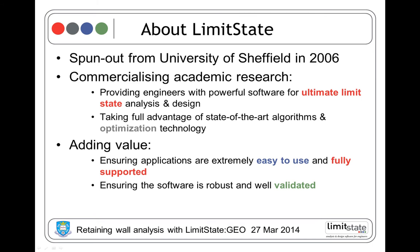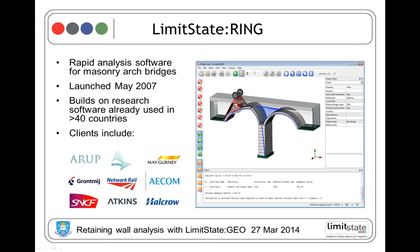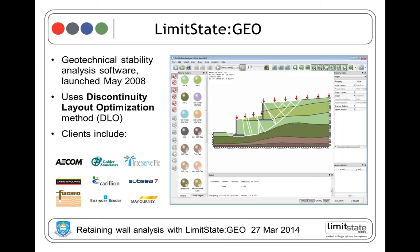For those new to this webinar series, it's useful to give a brief context of the software and the company. LimitState — spun out from the University of Sheffield in 2006 — has been conducting research into limit state analysis and design and the use of optimization in civil engineering for almost two decades. The company provides powerful tools with ease of use and support, and has sophisticated testing systems with over 800 automated tests run every time the software is changed. The company currently has two products: LimitState:RING and LimitState:GEO.